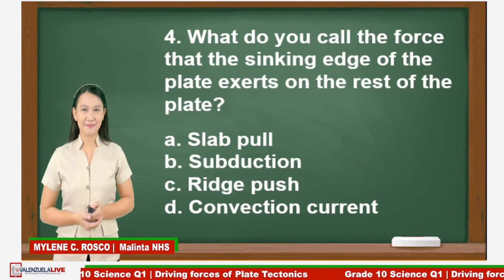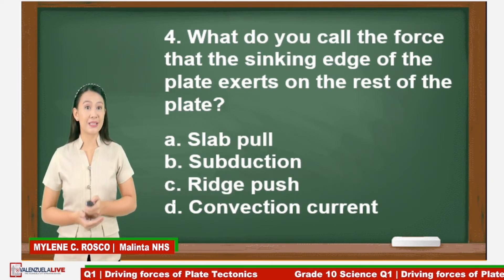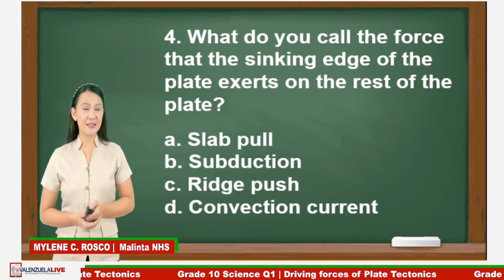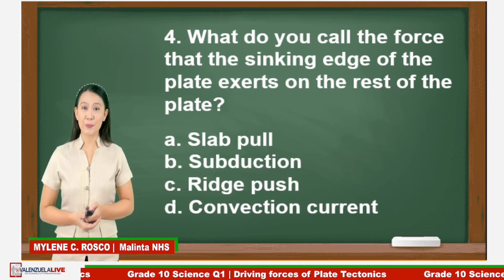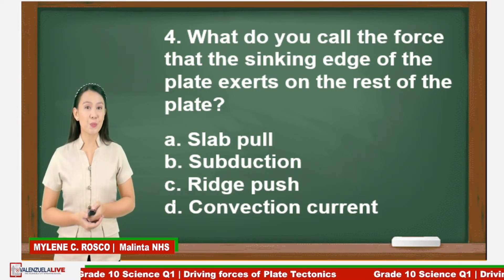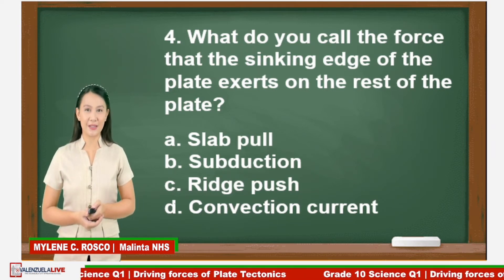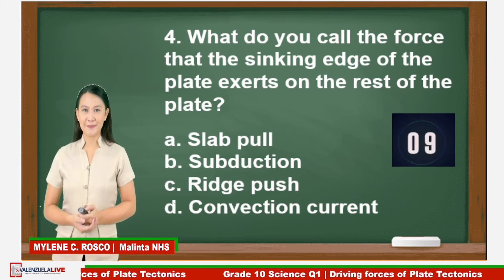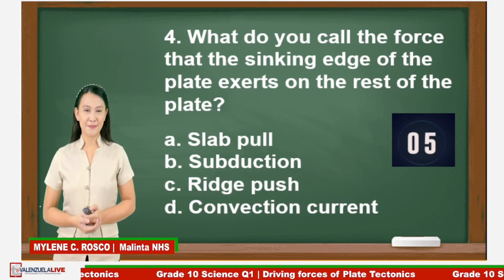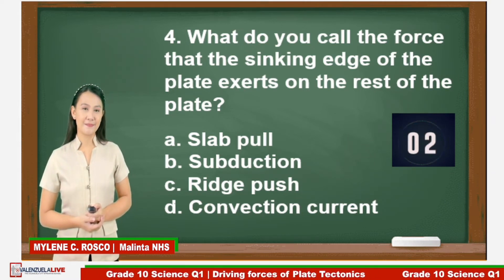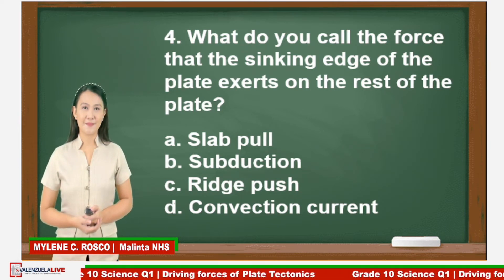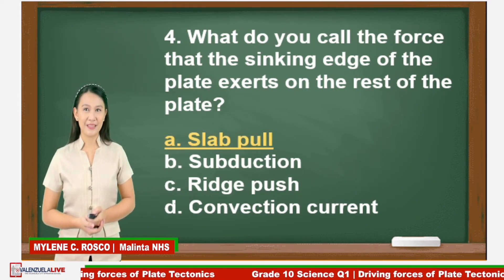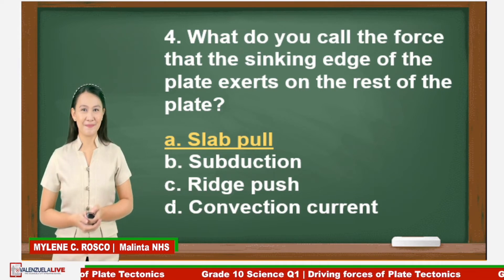Question number four: What do you call the force that the sinking edge of the plate exerts on the rest of the plate? A. Slab pull. B. Subduction. C. Ridge push. Or D. Convection current. You have 10 seconds — go. Time is up. The correct answer for number four is letter A, slab pull.